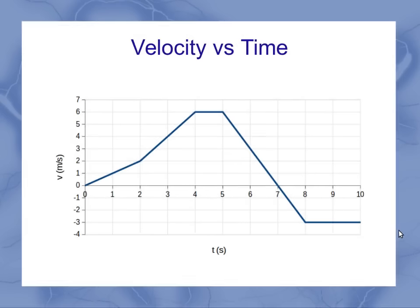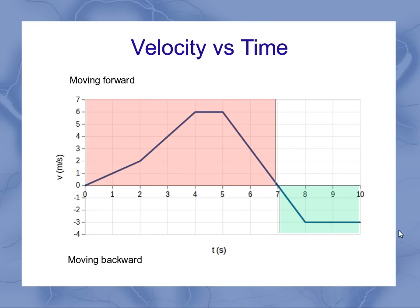Now let's look at the velocity versus time graph, starting with straight line segments. Positive means we're moving forward, and negative means we're moving backwards. Not moving is where we're crossing the x-axis, and in this graph it does that twice — once at the beginning and then once around seven seconds.